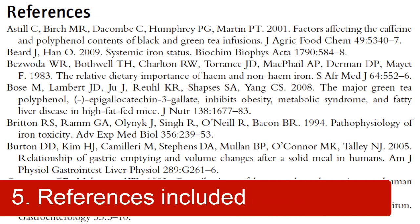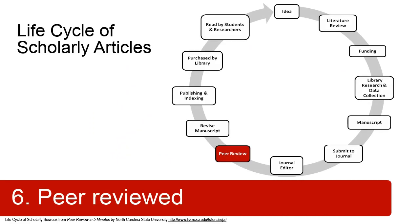A primary research article will always include a list of references cited, showing other literature the authors studied when conducting their own original research. Finally, primary research articles are published in scholarly, peer-reviewed journals. This means that the article was approved by a group of experts in the field before publication.